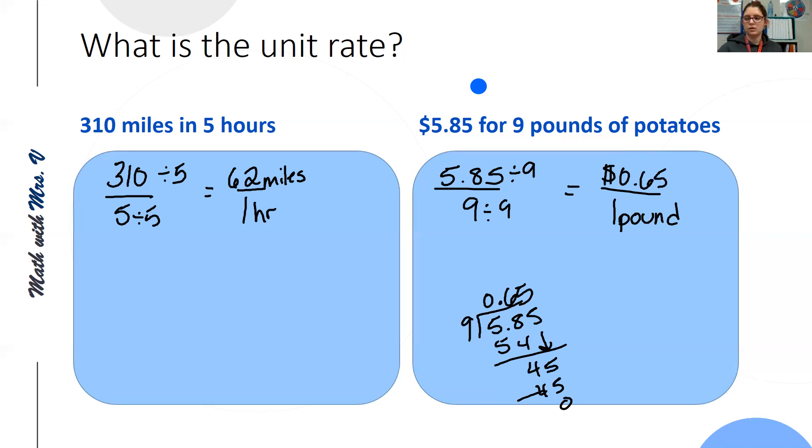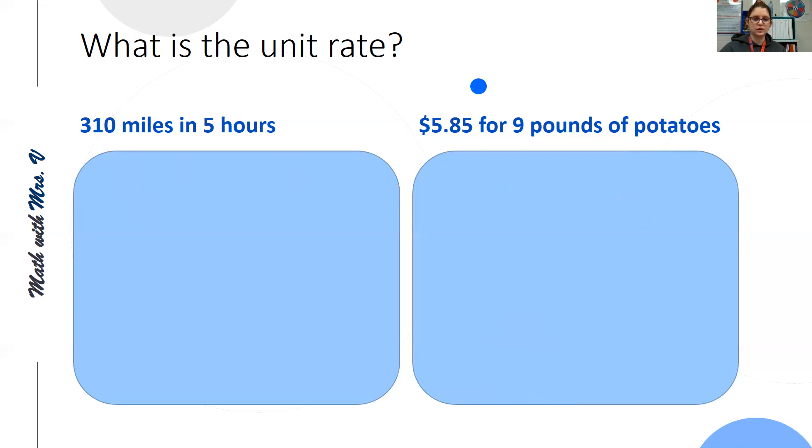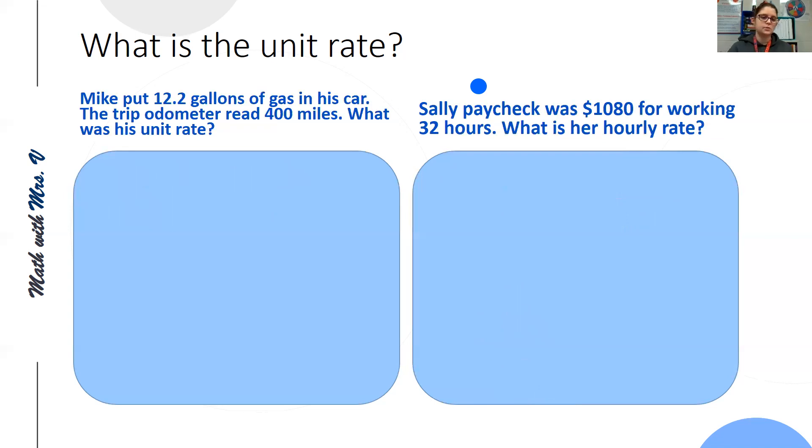Let's look at a more defined word problem to find unit rate. Mike put 12.2 gallons of gas in his car. The trip odometer read 400 miles. What was his unit rate? With this, it doesn't tell us, but we generally look for miles per gallon when you want to know your unit rate for your car.